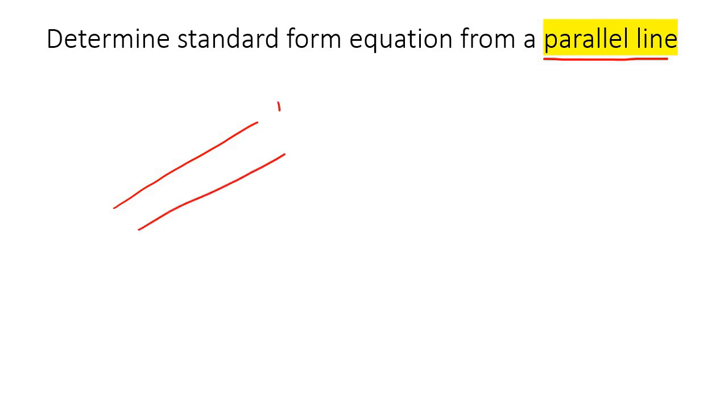so let's say we have line 1 and line 2, if those two lines are parallel, then it means that their slopes are the same.